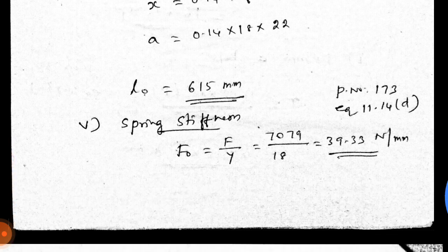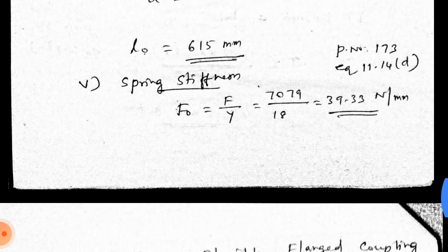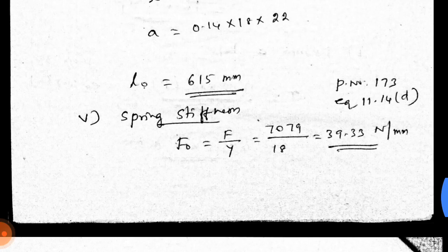The fifth step is spring stiffness. Spring stiffness = F / y, from page 173, equation 11.14d. The spring stiffness value is 39.33 N/mm. This completes both problems covered in this video.